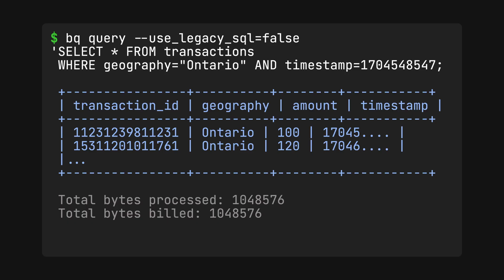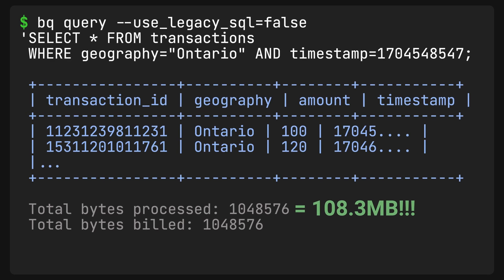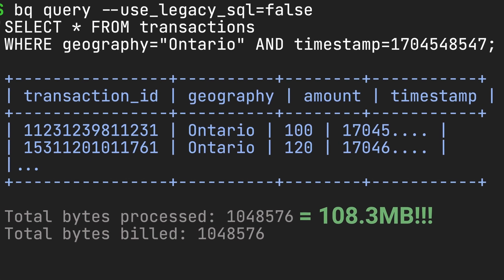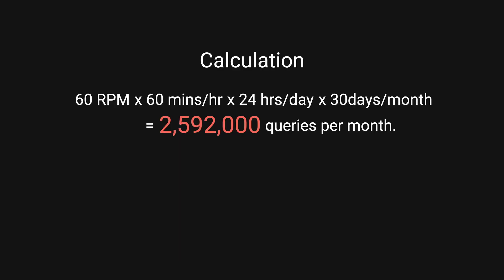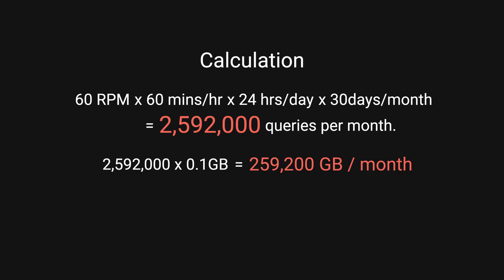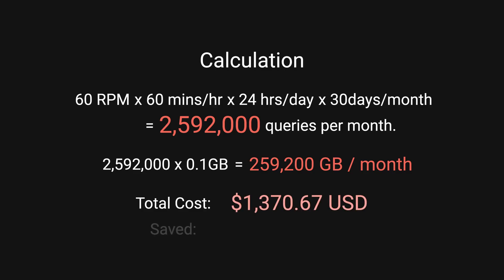After applying clustering to their tables, the exact same query log showed only 108.3 megabytes of data scanned. Isn't that amazing? Let's redo our cost calculation: 2,592,000 queries per month times 0.1 gigabytes only equals 259,200 gigabytes of data scanned per month. According to Shopify, this optimization brought down their cost to only $1,370 USD per month. While clustering resulted in a big win for them, they didn't stop there.